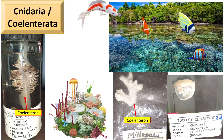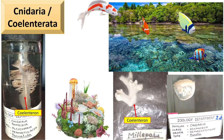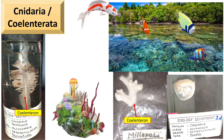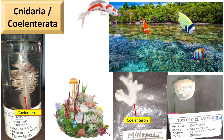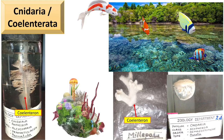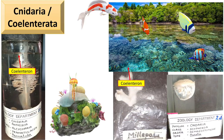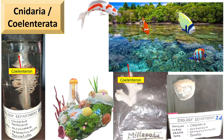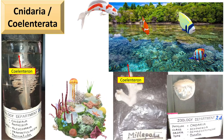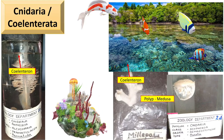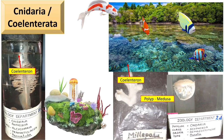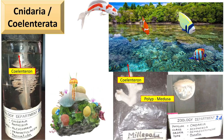Cnidaria or Coelenterata are more developed than Porifera and have a tissue-grade level of organization. All are aquatic. Two types of individuals occur: attached forms are polyps, and free-swimming forms are Medusae. The body wall is diploblastic with two cellular layers: outer epidermis and inner gastrodermis or coelenteron. The coelenteron also acts as a hydroskeleton against which contractile cells can work. Asexual reproduction is found in polyps and sexual reproduction in Medusae; therefore some show alternation of generations.